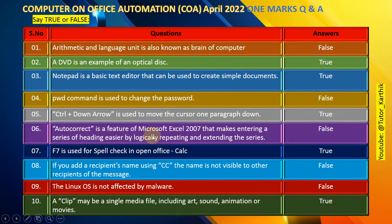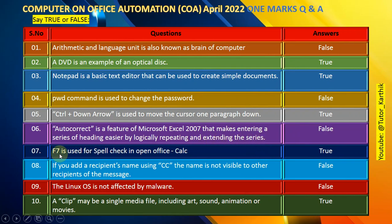Question number 6: Auto-correct is a feature of Microsoft Excel 2007 that makes entering a series of data easier by logically repeating and extending the series. False.